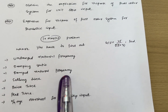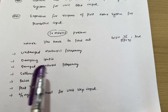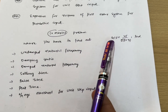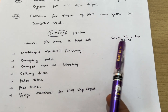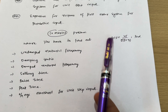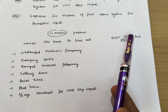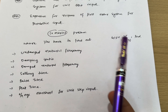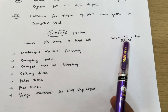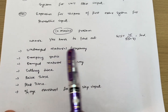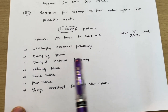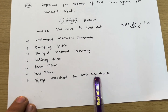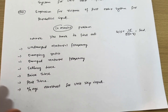The problems are also simpler ones and will be available in the notes. For example, G(s) = 25 / [s(s+7)] will be given, and you have to find undamped natural frequency, damping ratio, damped natural frequency, settling time, rise time, peak time, and percentage overshoot for unit step input. These are some super important questions for Module 2.